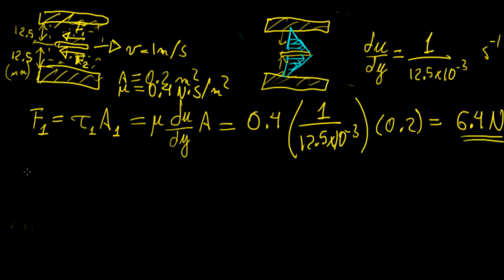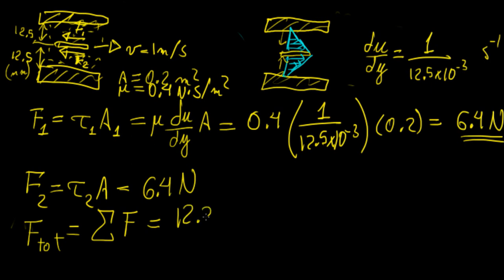Now force 2 is going to be calculated using the same method. But now we know that because these profiles are the same, then the forces should be the same. So that means this is also going to be 6.4 newtons. And in the end, the total force is just going to be the sum of those forces. So this is going to be 12.8 newtons.